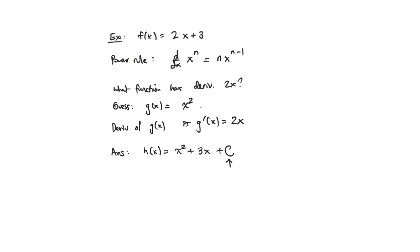And if we take the derivative of h, so if we go backwards, well, the derivative of x^2 is 2x, the derivative of 3x is 3, and the derivative of a constant is 0. So we just get our 2x + 3, which matches what we started with.